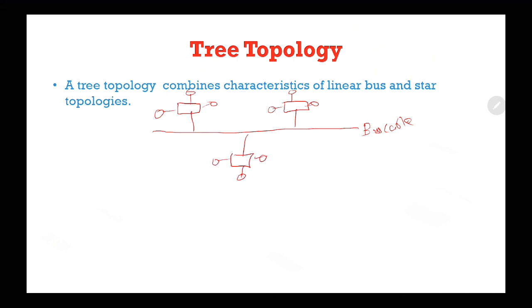These are the nodes or computers that are connected to each node along the bus. This is an example of a tree topology in which these are the star workstations connected to a first backbone.